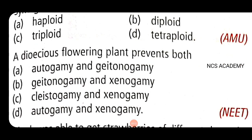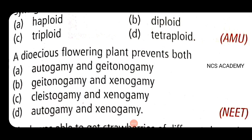Next, an important gynoecium question: dioecious flowering plants prevent both autogamy and geitonogamy. Dioecious plants are those in which male flowers and female flowers are borne on different plants. Therefore, they prevent both autogamy and geitonogamy, since male and female flowers are on separate plants.